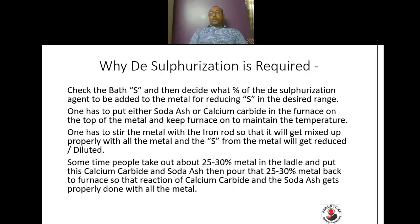Sometimes, people take out about 25 to 30 percent of the metal into the ladle, put calcium carbide or soda ash in the furnace, and then re-pour that 25 to 30 percent metal back into the furnace. This ensures the reaction of calcium carbide or soda ash is properly done with all the metal through stirring, increasing the efficiency of the desulphurization agent and achieving sulfur reduction.